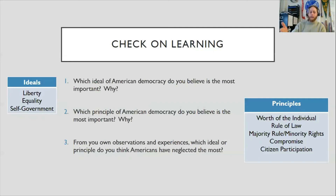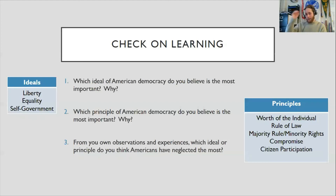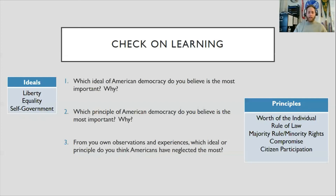The second question asks the same for the principles of American democracy — worth of the individual, rule of law, majority rule and minority rights, compromise, and citizen participation. Pick one and give a reason. The third question is the big brain moment: from your own observations and experiences living in the United States, which ideal or principle do you think Americans have neglected the most? Think about which of these eight you feel America as a whole could do better on, and share a story from your own experiences to answer that question.